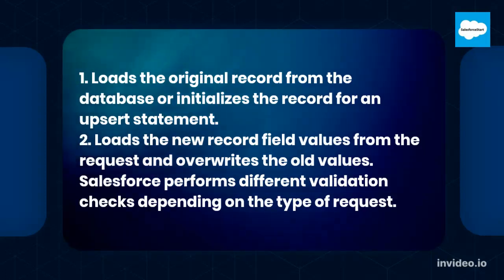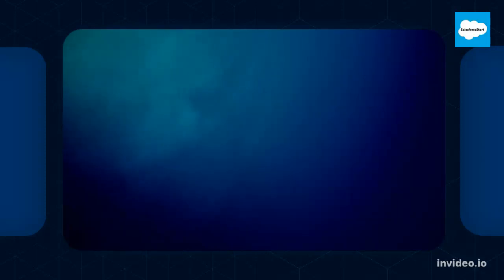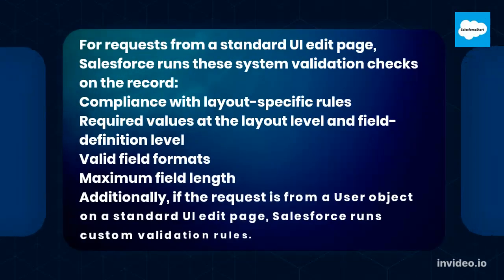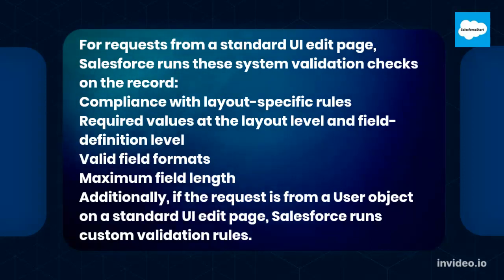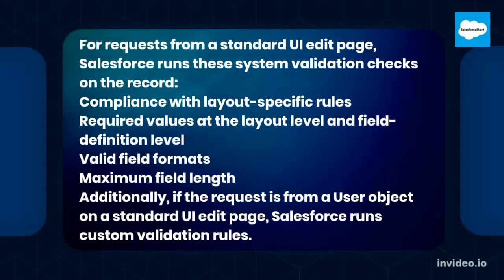Salesforce performs different validation checks depending on the type of request. For requests from a standard UI edit page, Salesforce runs these system validation checks on the record: compliance with layout-specific rules, required values at the layout level and field definition level, valid field formats, and maximum field length. Additionally, if the request is from a user object on a standard UI edit page, Salesforce runs custom validation rules.